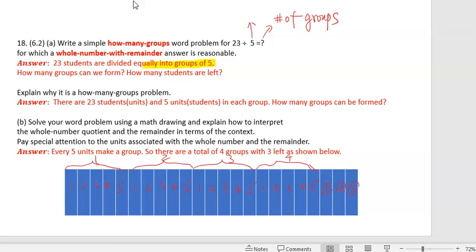...that means this number given must be number of units in one group. Again, 23 will be the total number of units. The first number in division in both interpretations always means the total number of units.